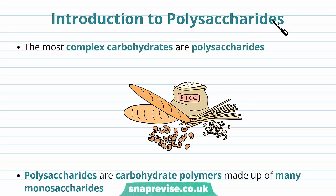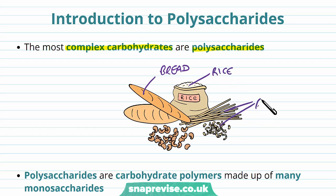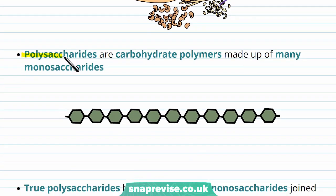Polysaccharides are another type of carbohydrate, and they're long, complex carbohydrates. We call them polysaccharides because they're made of many saccharides. Some polysaccharides can be found in certain foods, for example bread, rice, and various types of pasta as well. They're a very important carbohydrate.